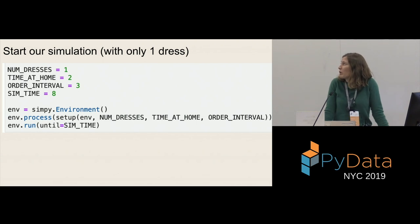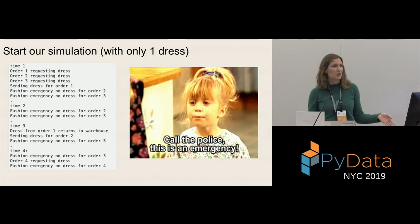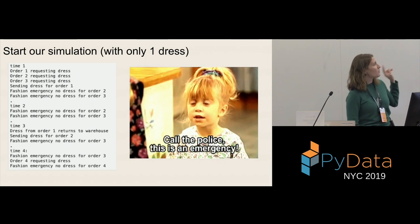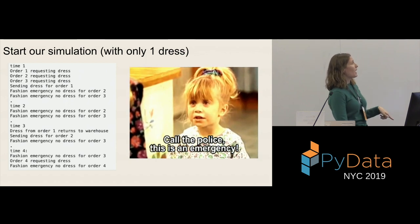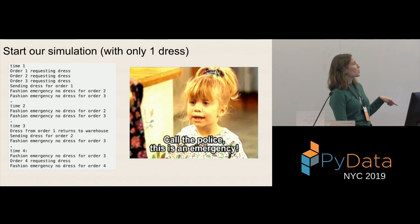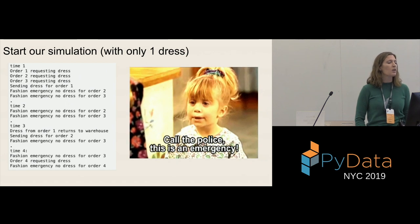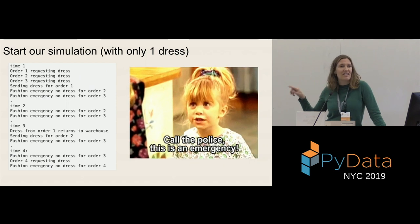Initially we run the simulation with only one dress, where people keep items for two days, a new order arrives every three days, and we run for eight days. Pretty obviously this doesn't work out well for us. We have three orders and only one dress, so we have a bunch of fashion emergencies even at time one. At time two we still don't have our dresses. At time three we get one dress back and can send it out for order two. Order three never gets their dress, and at time four another order comes in with more fashion emergencies. We know this is never going to catch up — this is not a feasible amount of dresses to have.